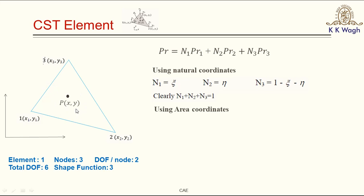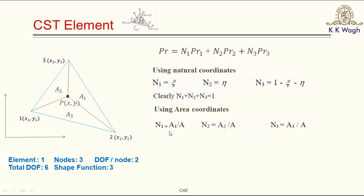To find the areas a1, a2, and a3, we divide the element into three parts by joining lines from each node to point P. The area in front of node 1 is denoted a1, in front of node 2 is a2, and in front of node 3 is a3. So the shape functions using area coordinates are: n1 = a1/a, n2 = a2/a, and n3 = a3/a, where a is the total area of the element.